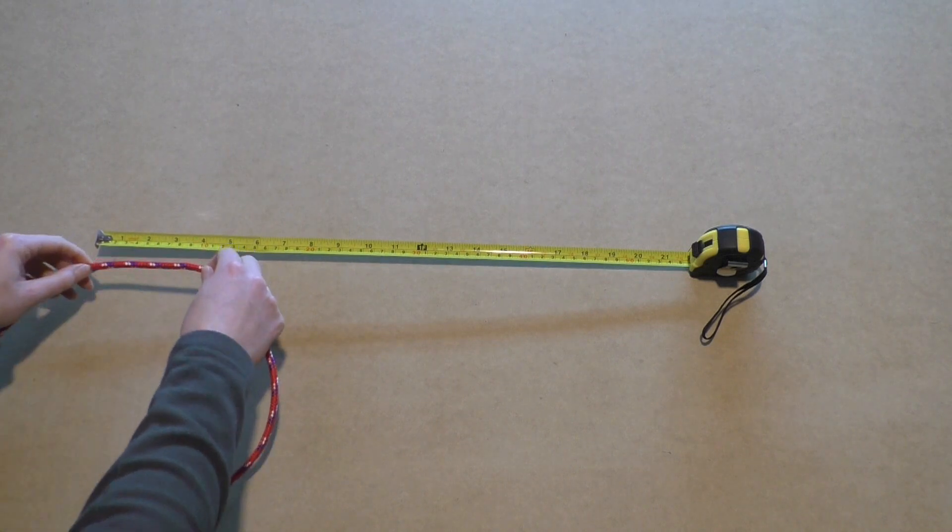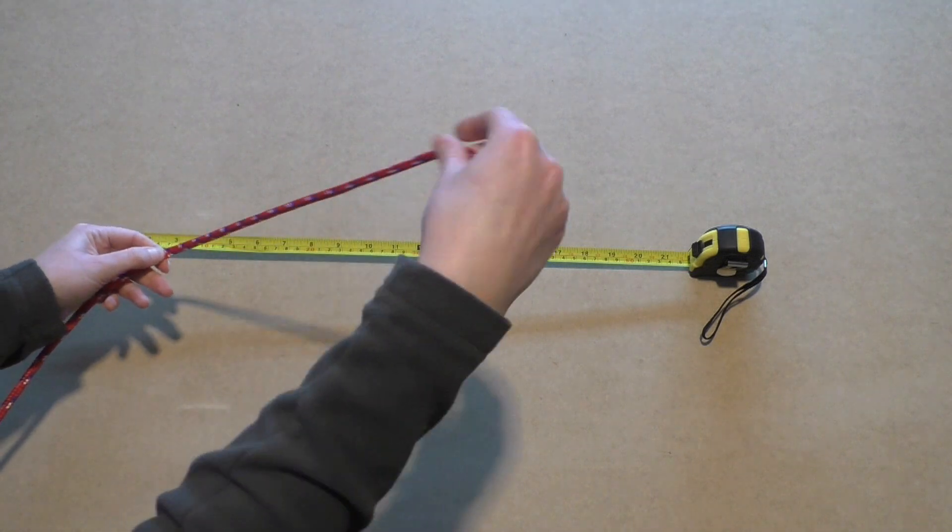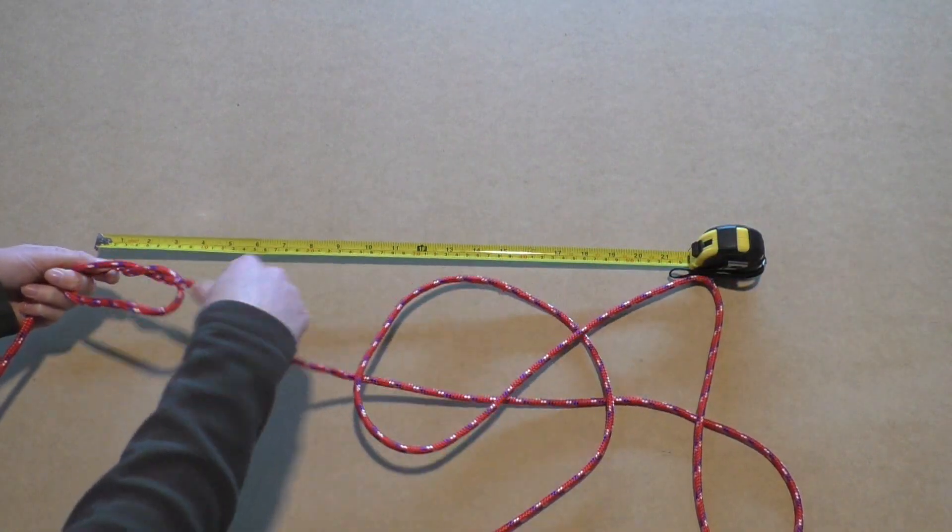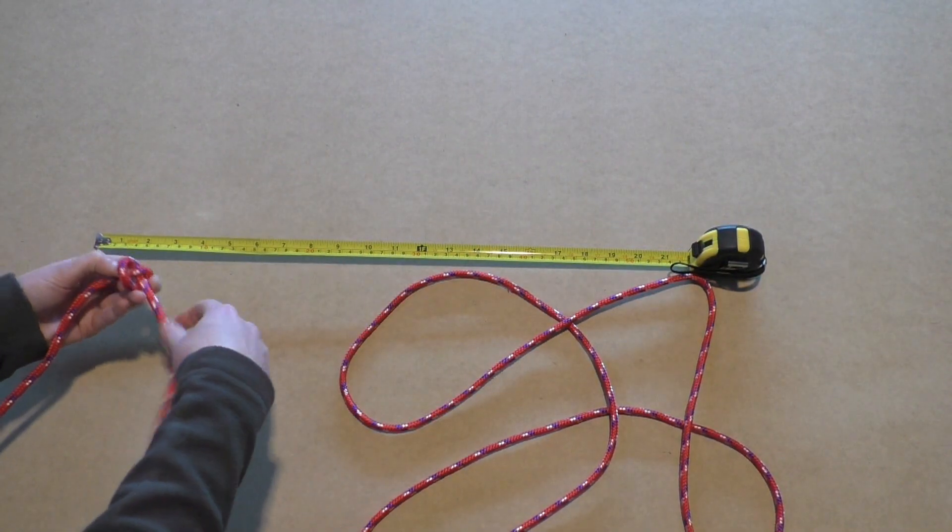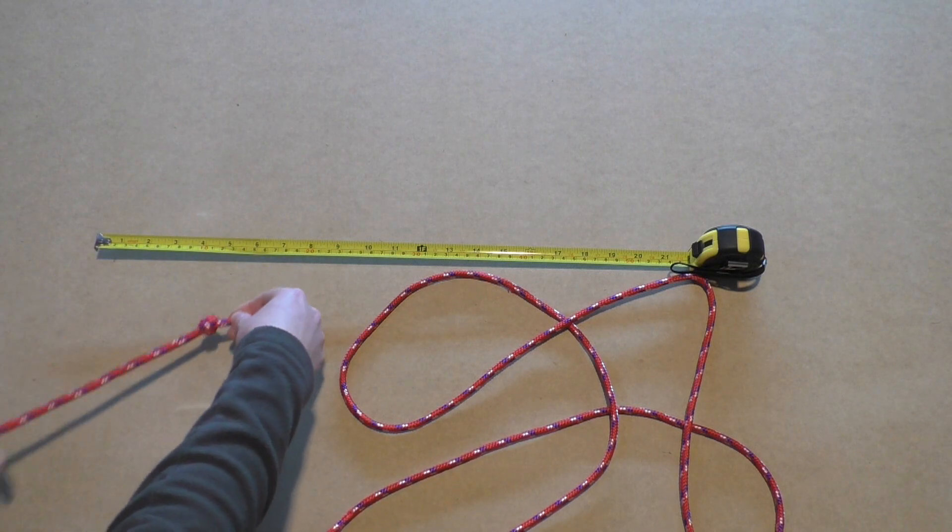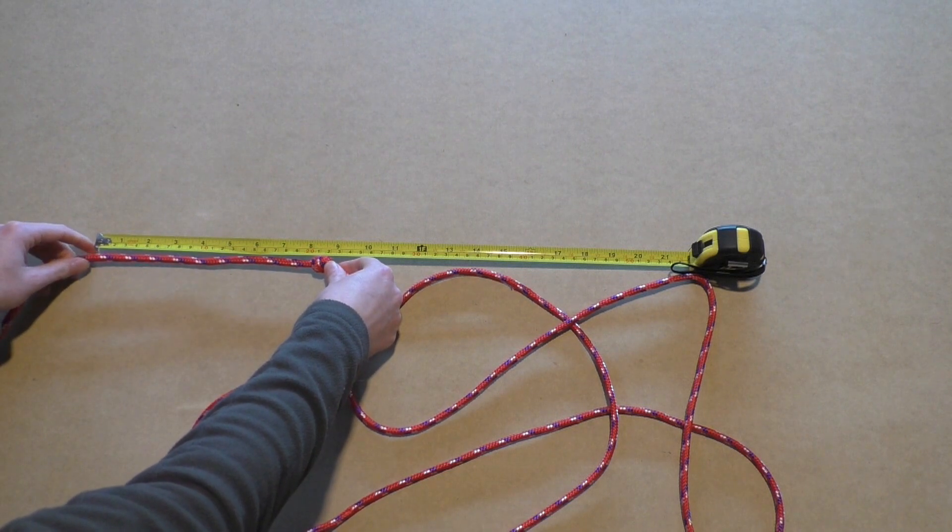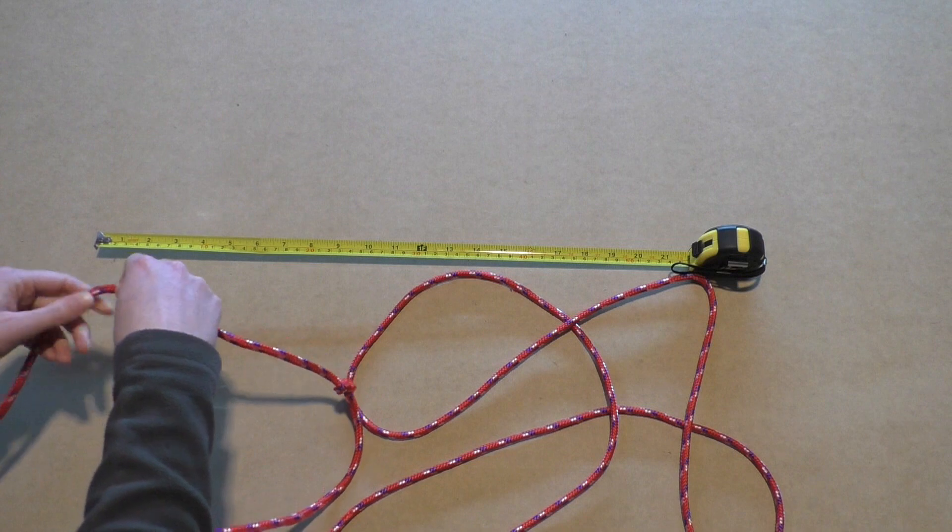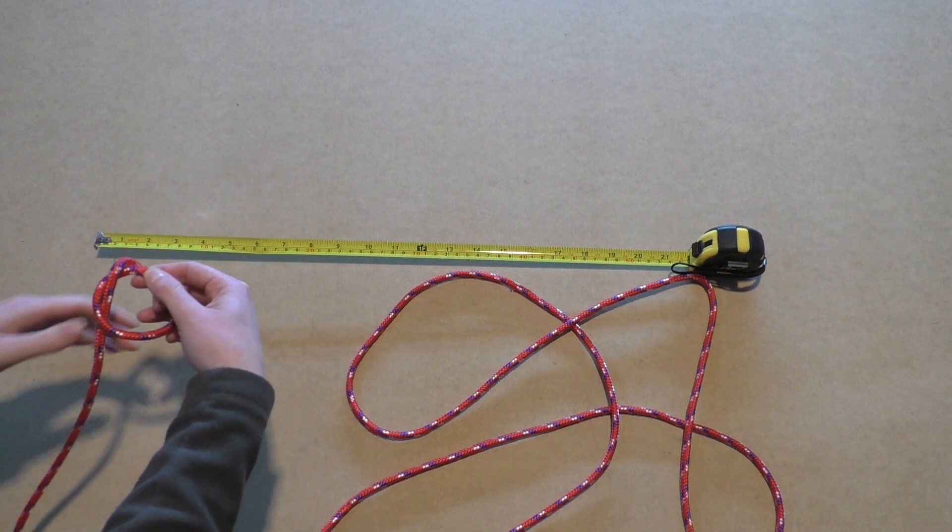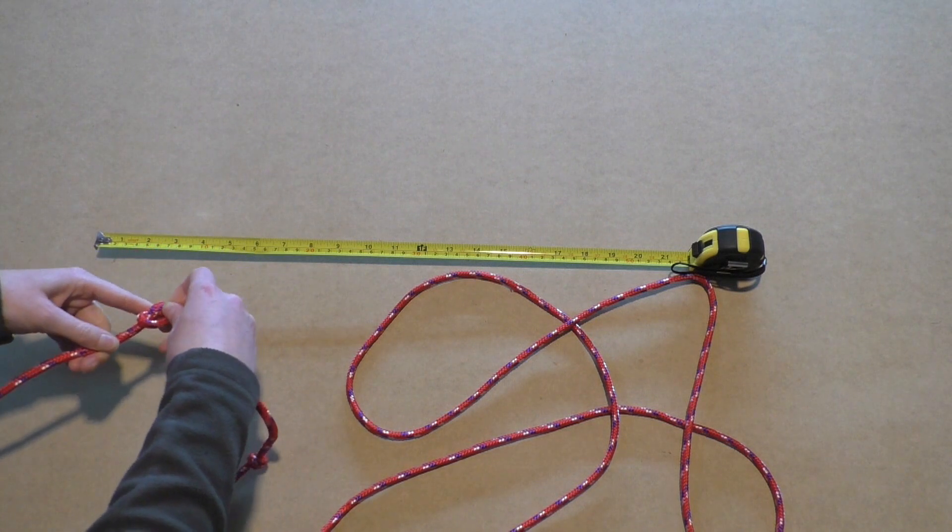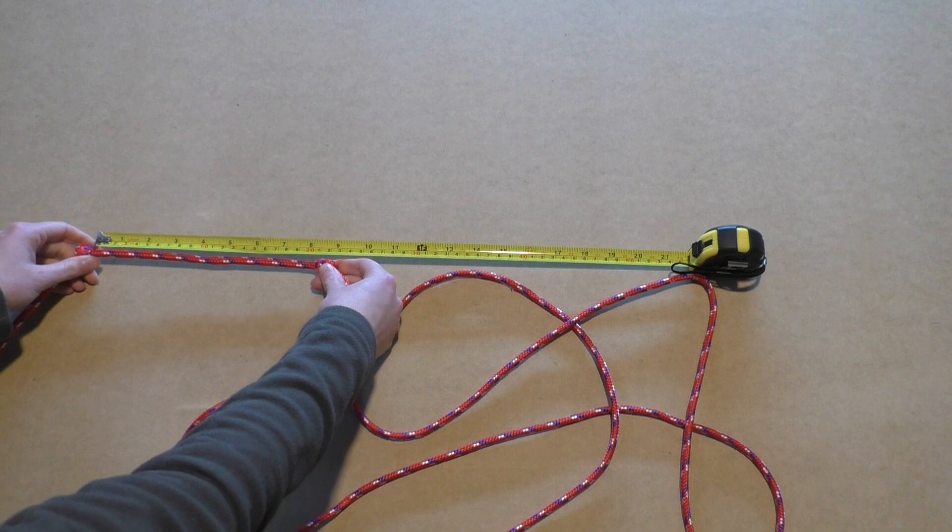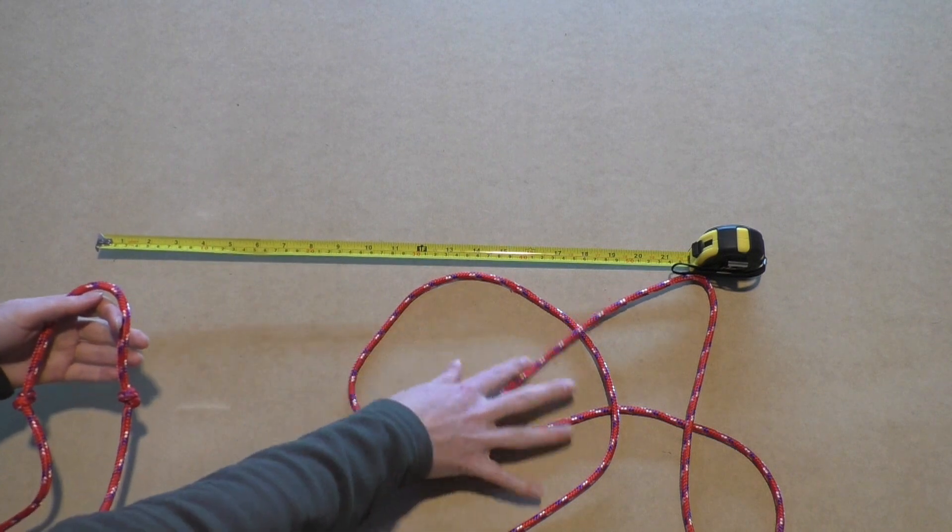From this new middle, move 10 centimeters to one side. There you make an overhand knot. If you want to know how to make the overhand knot, click the link in the description. After making this first knot, move 10 centimeters to the other side of the middle, which is technically just 20 centimeters from the knot you just made. Again, make an overhand knot. Now you have two knots which are 20 centimeters apart from each other. These will be the knots which will be on the noseband.